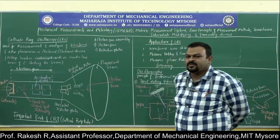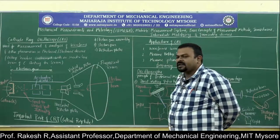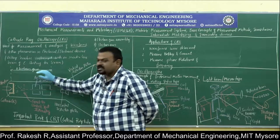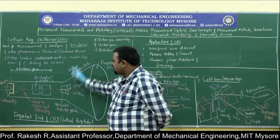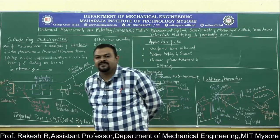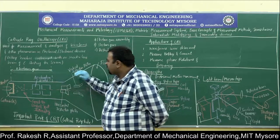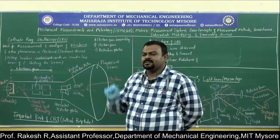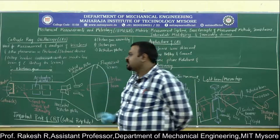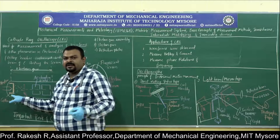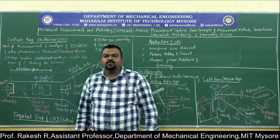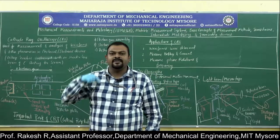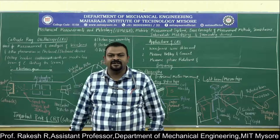The CRO consists of three main parts: the electron gun assembly, vertical deflection plates, and horizontal deflection plates. The cathode is a good emitter of electrons and the anode is a good attractor of electrons. Electrons flow from cathode to anode; a heater can also be used to generate electron flow from the cathode.